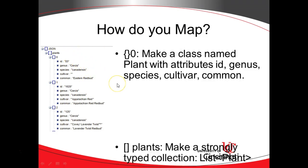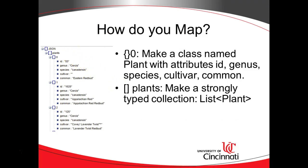Now let's handle the square brackets — that's a collection. The easiest way to handle this is with a strongly typed collection. We can have a List with a generic type of Plant, which says this list can only hold Plant objects. We've started at the leaf, gone up to the object, and now the collection of objects. Up one layer from that is something called JSON — that's our root element.